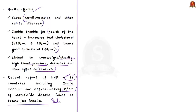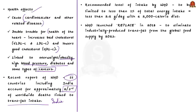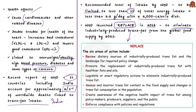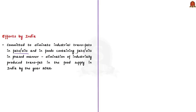Let us see the recommended level of TFA intake. WHO recommends that trans fat intake be limited to less than 1% of total energy intake, which translates to less than 2.2 grams per day on a 2,000 calorie diet. But WHO wants trans fats to be eliminated totally. For this, in 2018, WHO launched a comprehensive plan to eliminate industrially produced trans fat from the global food supply by the year 2023, named REPLACE. In the same line, India also committed to eliminate industrial trans fats in fats, oils and foods in a phased manner, and FSSAI is working for elimination of industrially produced trans fat in India by 2022 — a year ahead of WHO's target.